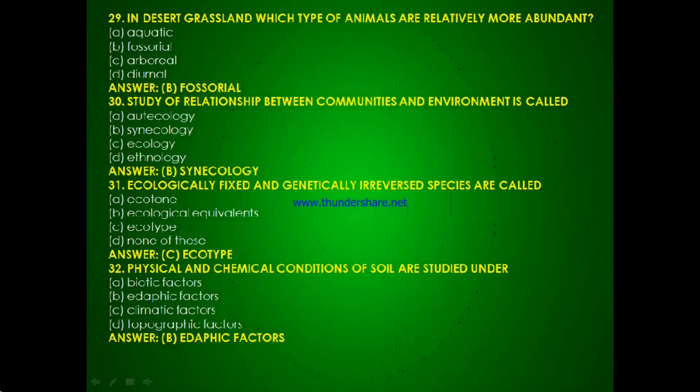Question 27: In desert grassland, which type of animals are relatively more abundant — aquatic, fossorial, arboreal or diurnal? The answer is B, fossorial.